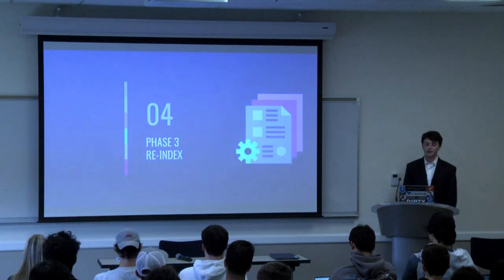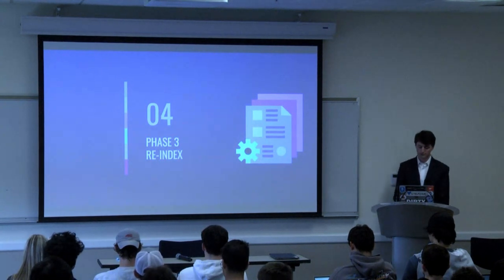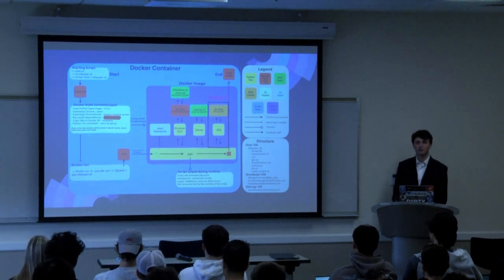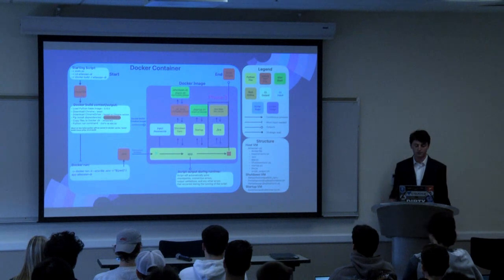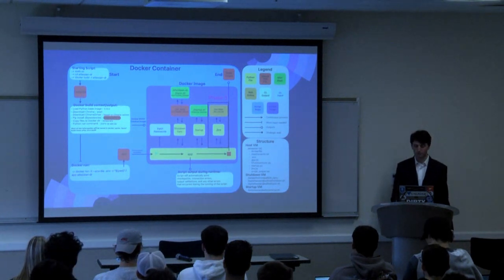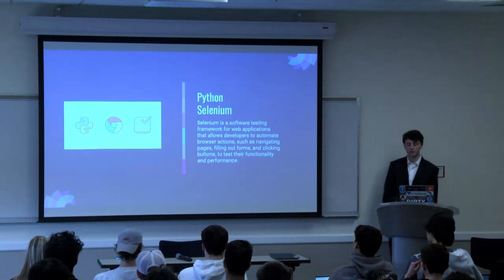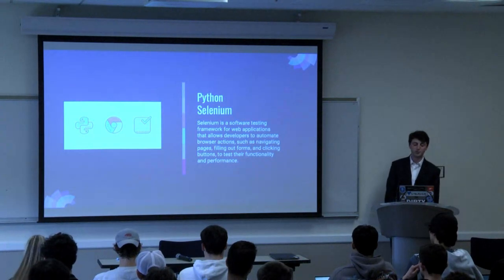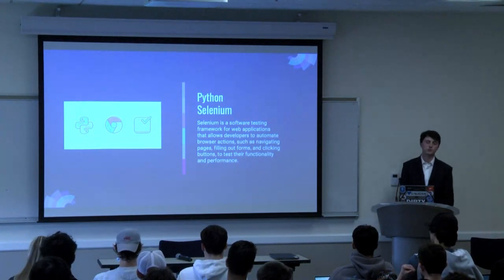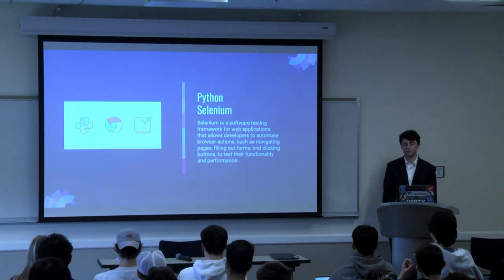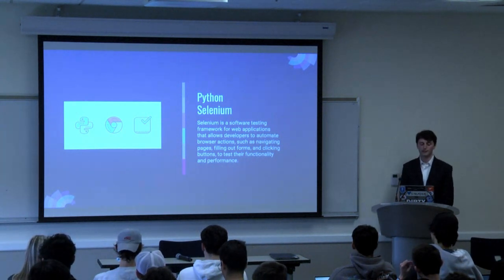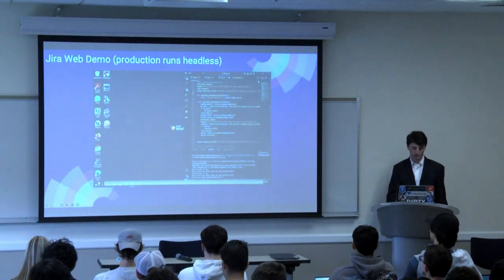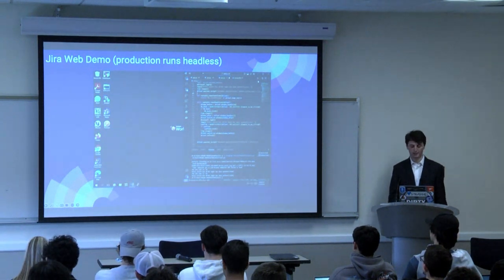Phase three of the project is the re-index process. This is by far the hardest part of the process for me — it was very difficult to debug and fix any issues. This was accomplished with Python Selenium, a software that allows you to interact with websites. It's mostly used for testing websites, but here I'm using it to navigate, log in, and interact with different buttons on the JIRA website. Here's a quick demo to show exactly what this does because I think it's pretty visual and it looks pretty cool.